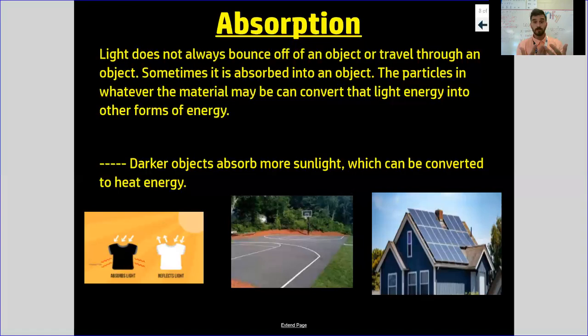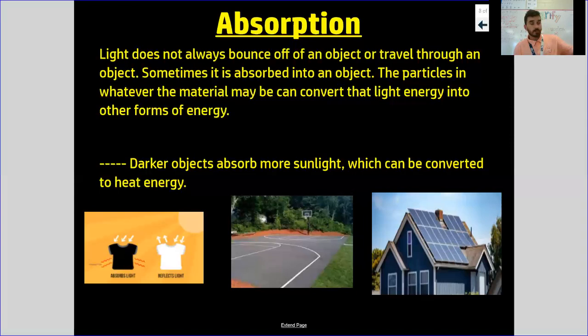When that light hits something smooth and shiny, that's why you see yourself looking back at you. Now let me go back to reflection real quick — I talked about smooth and shiny surfaces. If light hits something that is not smooth or shiny, you're not going to see your reflection; you're just going to see that object. Like our classroom chairs are curved. The light still reflects off that chair into my eyes, but I just see that object, not my reflection.